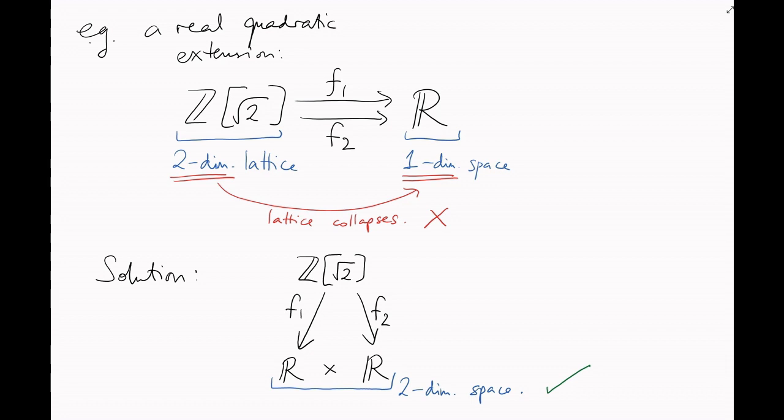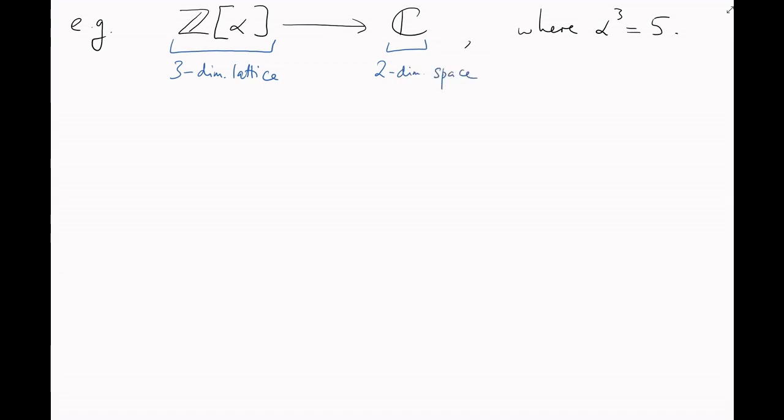The same problem arises in higher dimensions too. Let's take z of alpha, where alpha is a cube root of 5. This is a cubic extension of z, which means that its integral basis has three elements. In other words, its additive picture is a three-dimensional lattice.